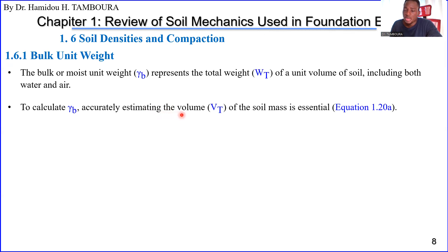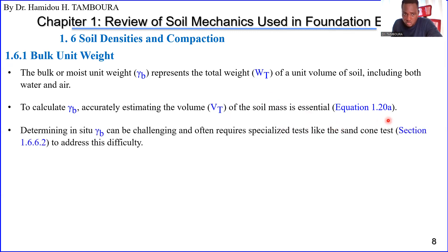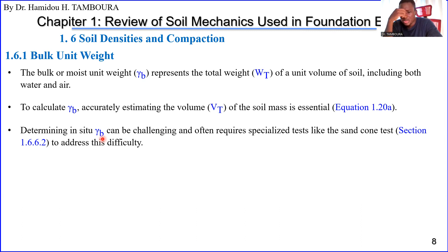To calculate bulk unit weight accurately, estimating the total volume V_t of the soil mass is important. Unit weight is weight divided by volume, so if you have the total weight, you also need the total volume. Determining gamma_b in the field can be challenging and sometimes requires specialized tests like the sand cone test, which is discussed in section 16.62.